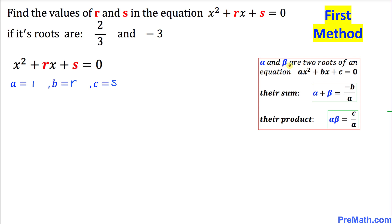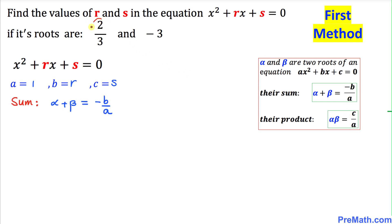If alpha and beta are two roots of our quadratic equation ax squared plus bx plus c equal to 0, then the sum of these roots is going to be negative b over a, and their product is going to be c over a. In our case, 2/3 is our alpha and negative 3 is our beta.